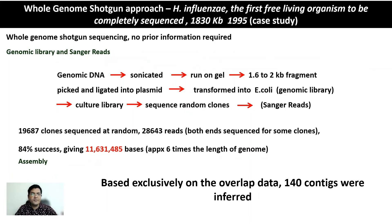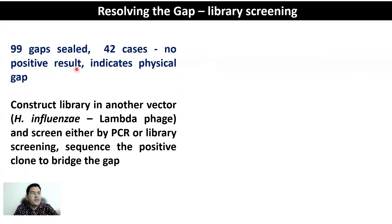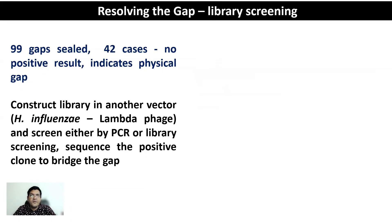Of the 139 internal gaps, 99 were sealed or finished after library screening. In the remaining 42 cases there were no positive results, indicating these are physical gaps — gaps occurring because certain portions of the genome were not represented in the library. To address physical gaps, the best approach is to make a library in a different organism. A second genomic library was therefore prepared in a Lambda-FajI vector, and the library was screened again to fill the final gaps.